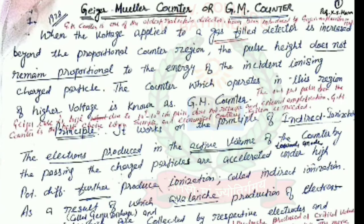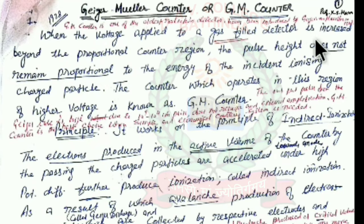Hello friends, today we are going to discuss the brief introduction and working of the Geiger-Muller counter, commonly known as the GM counter. This counter was designed and introduced by Geiger and Muller in the year 1928, making it one of the oldest detectors. When the voltage applied to the gas-filled detector is increased beyond the proportional counter region, the pulse height does not remain proportional to the energy of the incident ionizing charged particle. The counter which operates in this region of higher voltage is known as the GM counter.